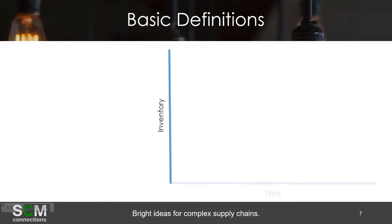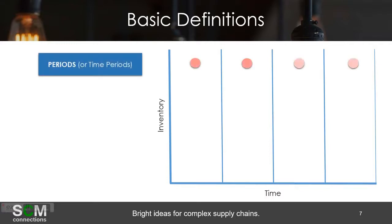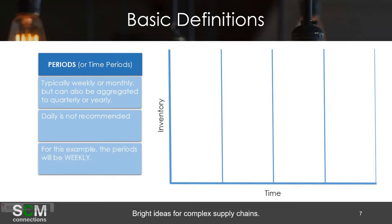As far as basic definitions go, this is kind of your crash course on Inventory Management to get you on the same terminology that SAP uses for IBP Inventory. The first concept you need to understand is periods or time periods. They're typically weekly or monthly, but can also be aggregated to a quarterly or yearly level. Daily is not recommended at this level. For this example, the periods will be weekly.